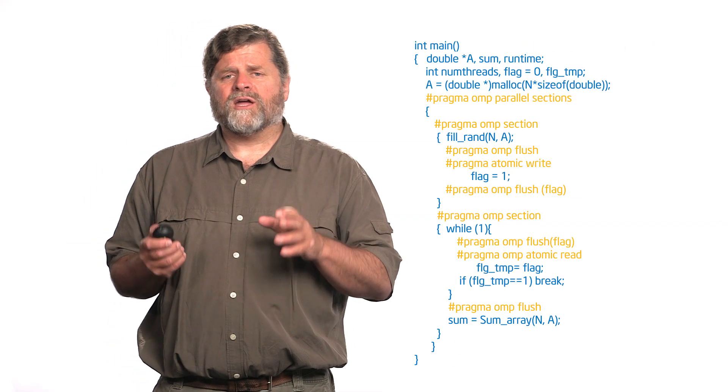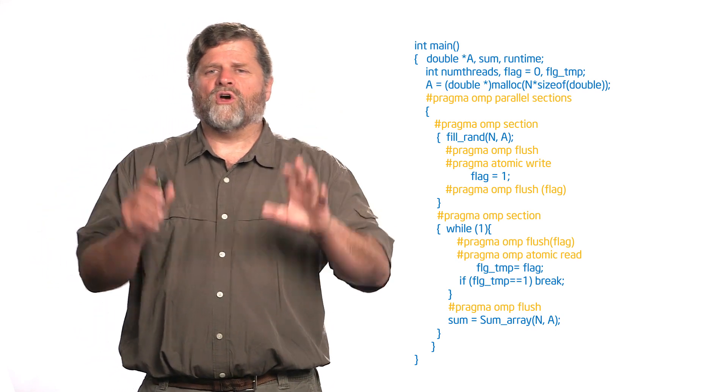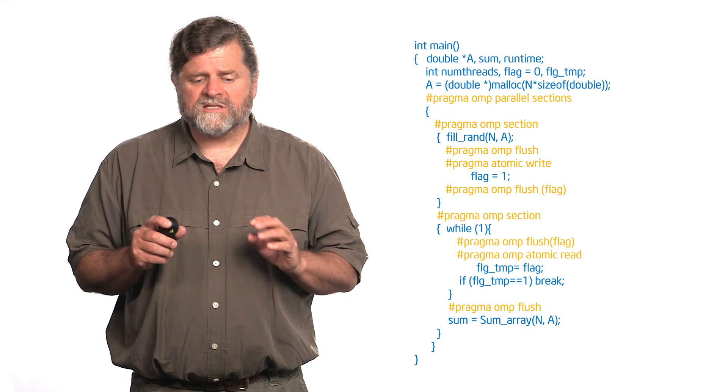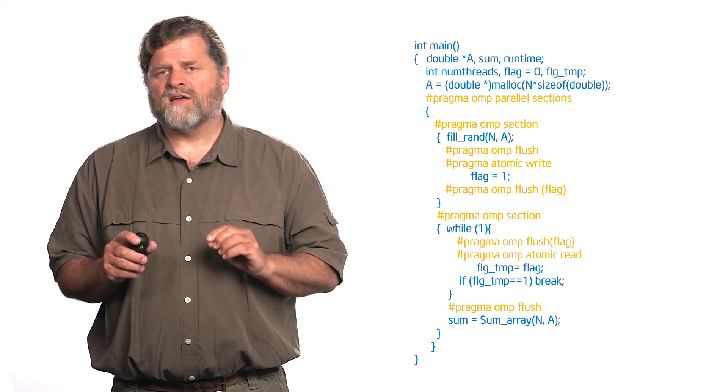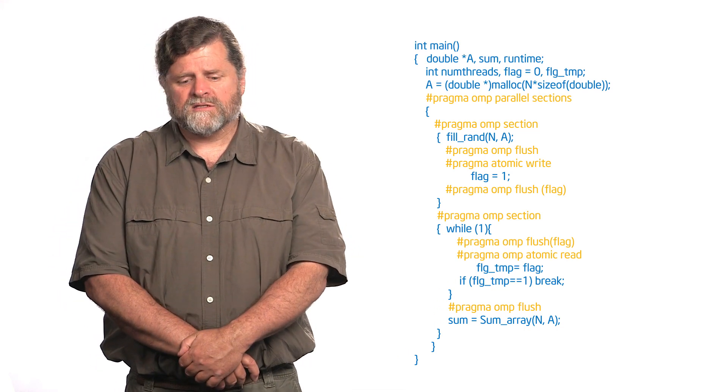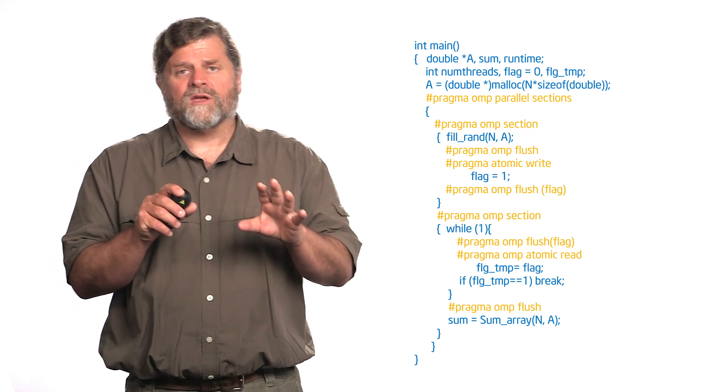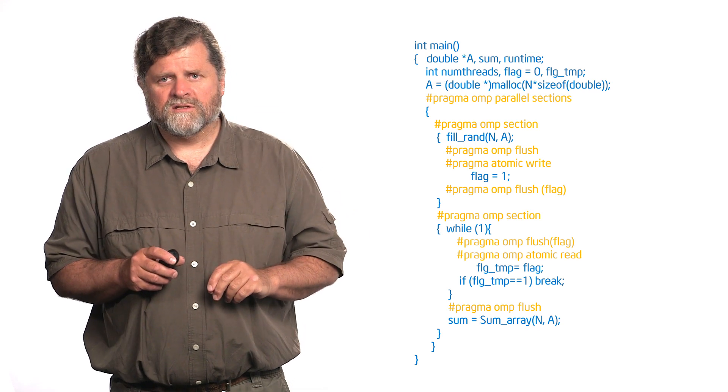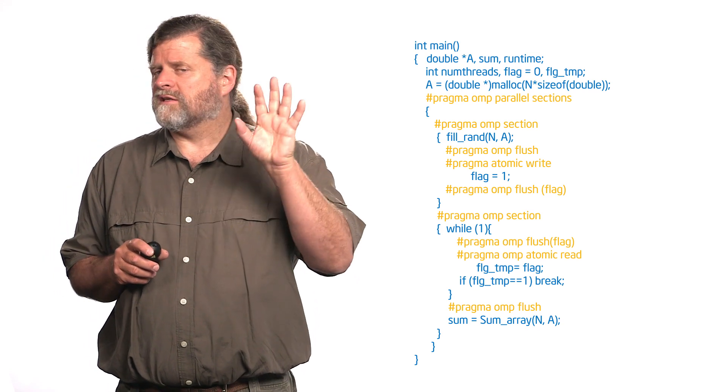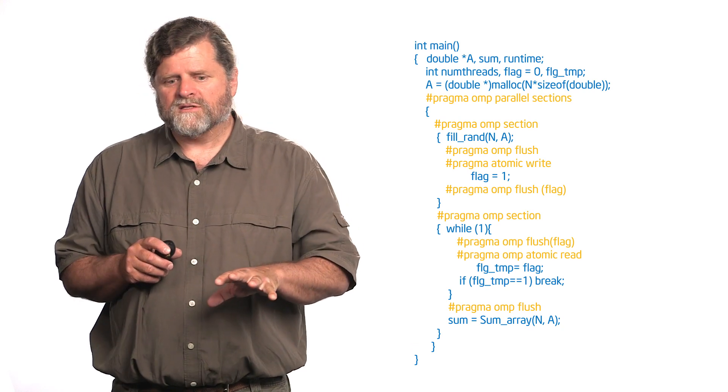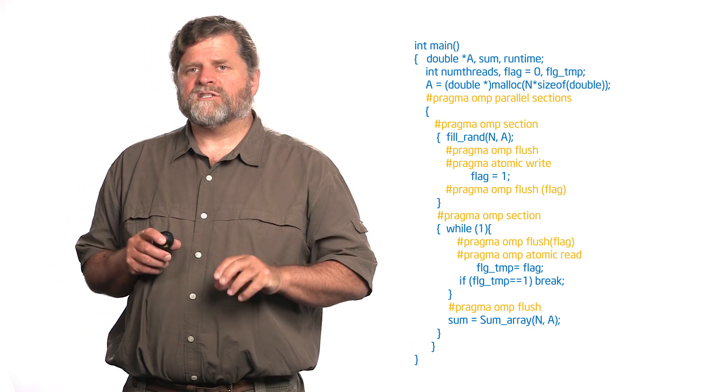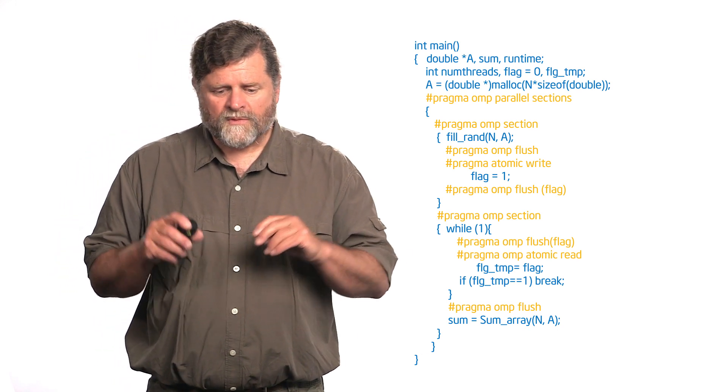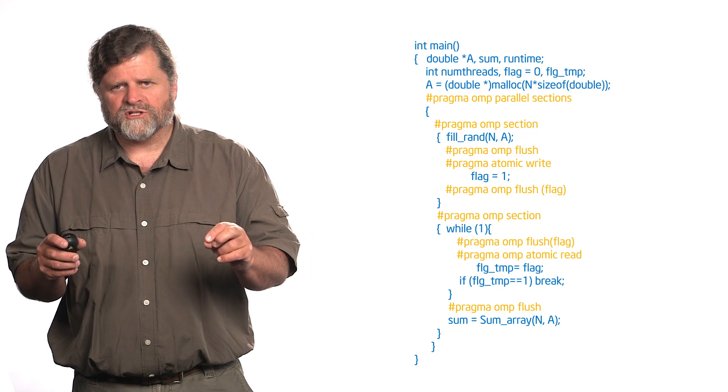But now if we look at my code and now we can see the total race-free correct version of this program. And you can see that what I changed here is I've now protected the updates, the write and the read of flag. So bear with me here. Just like before, I've got a pragma omp sections. I've got the parallel. So I've got at least, and I would verify that there are at least two threads. I'm going to have one section be the producer, one section be the consumer.